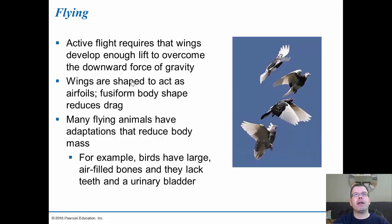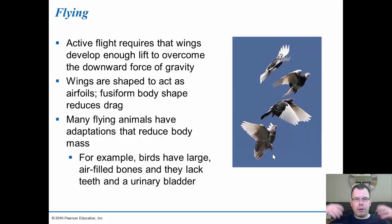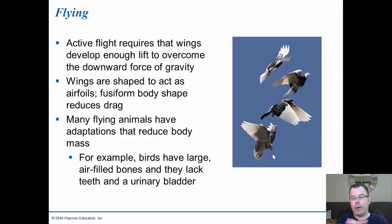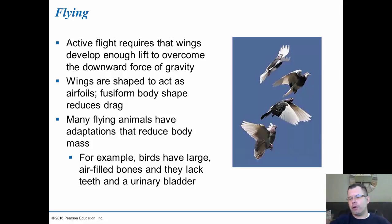The last type of movement is flying. This requires wings to develop enough lift to overcome the downward force of gravity. Wings are shaped to act as airfoils, and a fusiform body shape reduces drag. Many flying animals have adaptations to reduce body mass — birds have air spaces in their bones, they lack a urinary bladder, and lack teeth, all reducing weight. To fly, you have to get rid of weight. If humans wanted to fly on their own, they would have to lose a lot of weight and replace their heavy bones, as there's no way to get off the ground without some type of mechanical force.